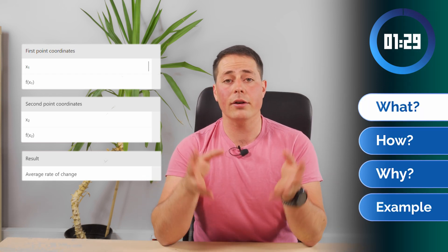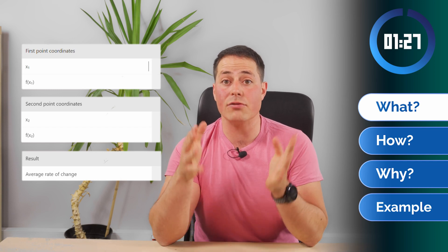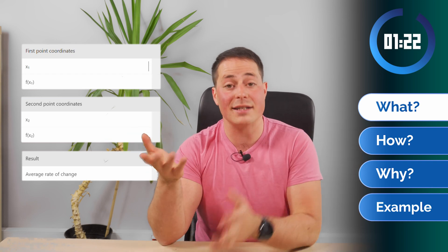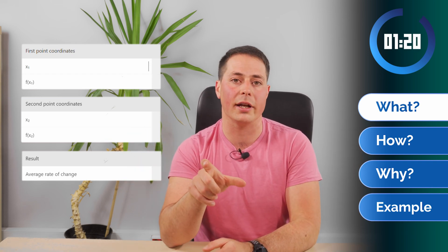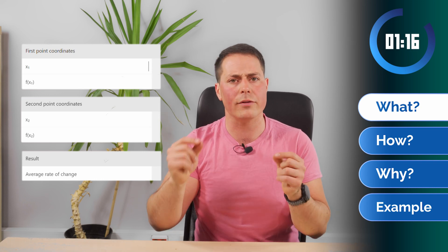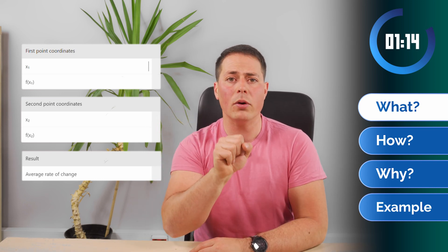This calculator helps you find the average rate of change of a given function between two points. I mean, that's in the name, but there's a different way to look at it: it calculates the slope between those two points, giving you some sort of trend line. But a bit more on that later.